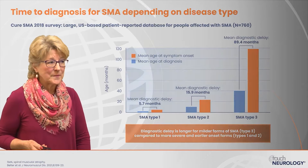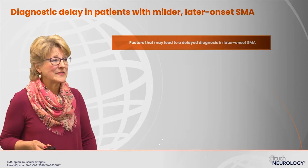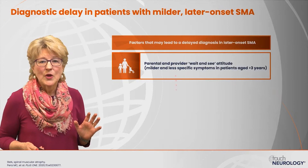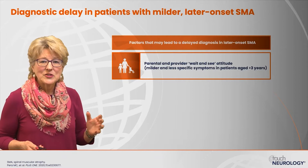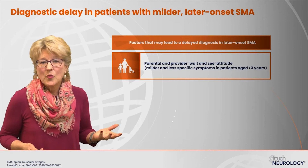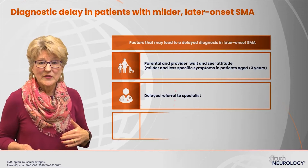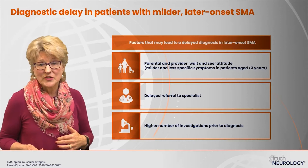Factors leading to delayed diagnosis in later onset SMA include a parent or provider adopting a wait-and-see attitude, reasoning that all children develop differently. The patient may be referred to a physical therapist rather than a specialist, and there's delayed referral to a specialist as a result. In the more mild phenotypes, we see a higher number of investigations prior to a diagnosis being made.